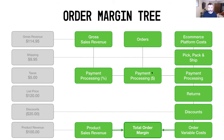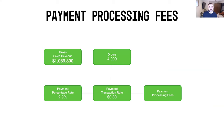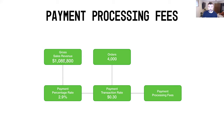Typically when you think about payment processing fees, you've got your gross sales revenue and your orders. This gross sales revenue is a little bit different from what we've been using in the past. We've been using around a million dollars of product sales revenue, but gross sales revenue also includes things like your shipping costs and your taxes from the order example. The reason it's a little bit higher is because credit card companies charge you for what you're collecting from the customer, not necessarily what's going straight into your pocket.